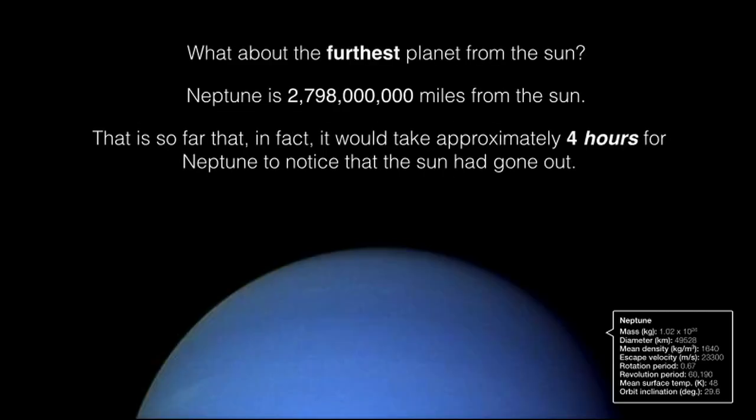What about the furthest planet from the Sun? Neptune is 2,798,000,000 miles from the Sun. That is so far that, in fact, it would take approximately 4 hours for Neptune to notice that the Sun had gone out.